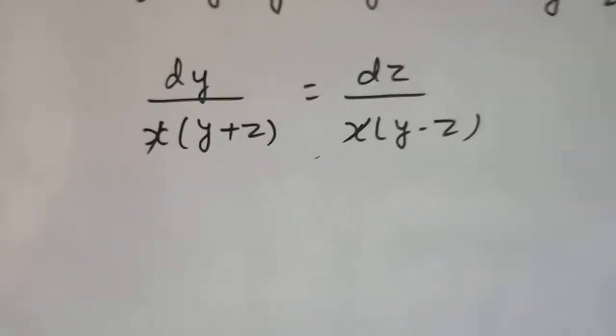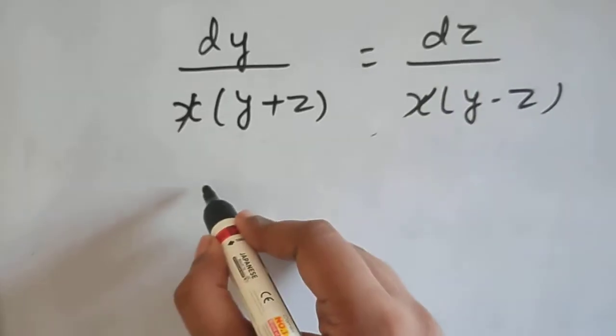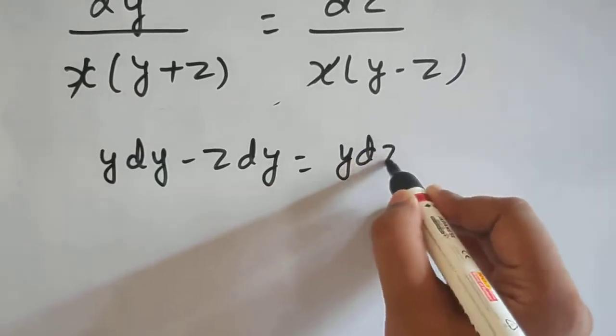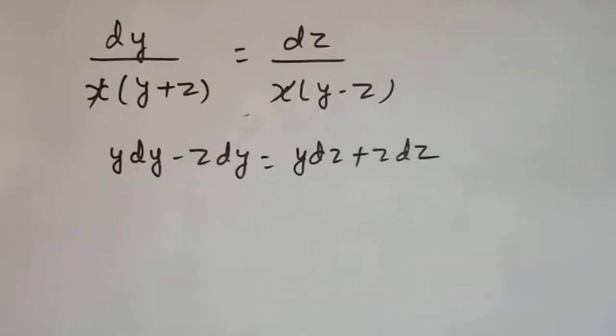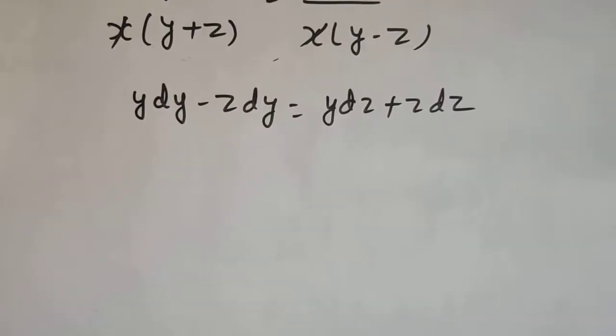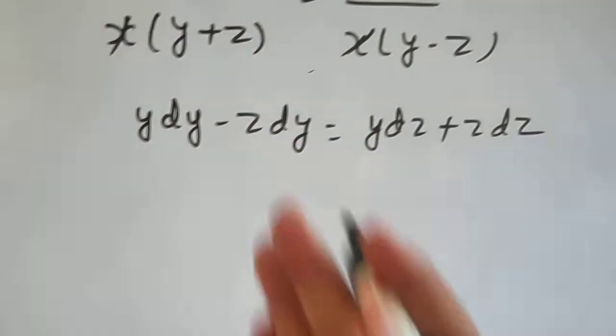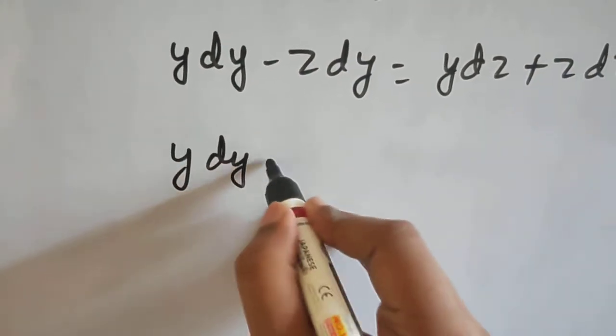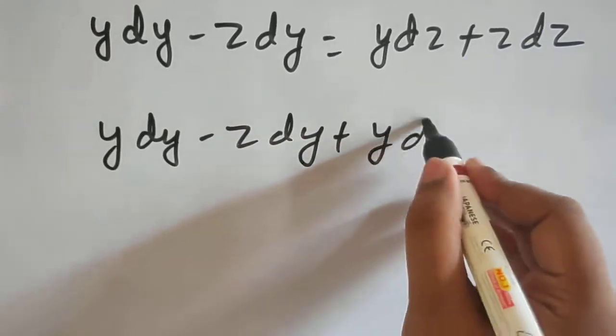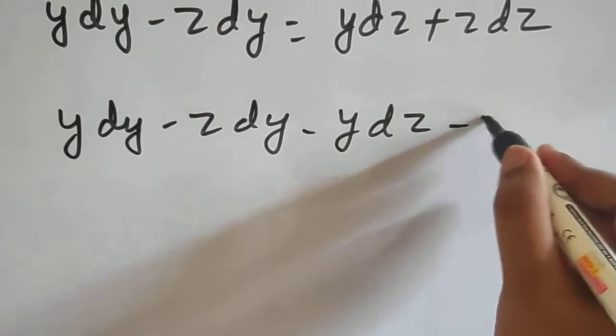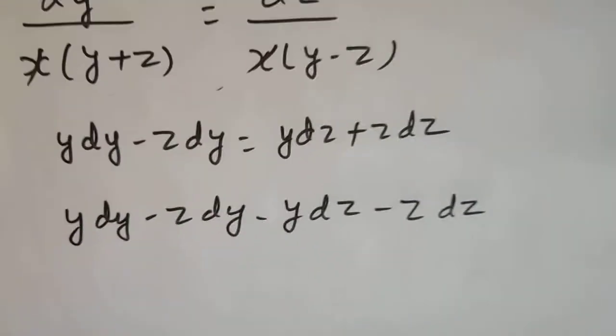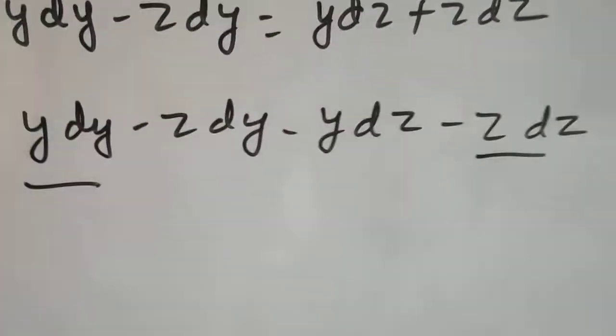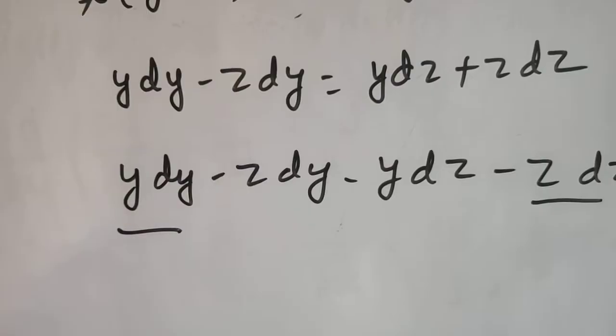Now, cross, just cross without thinking much, YDY minus ZDY equals to YDZ plus ZDZ. Now, bring everything in the left hand side and see whether we can manage something. So, YDY minus ZDY plus YDZ, sorry, minus YDZ and minus ZDZ. YDY perfectly fine, ZDZ again perfectly fine. And ZDY, can you recall of something?